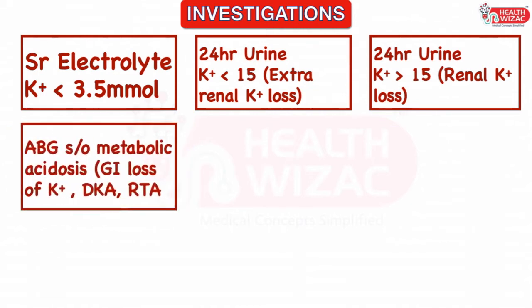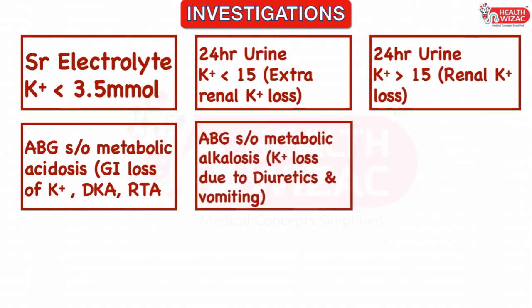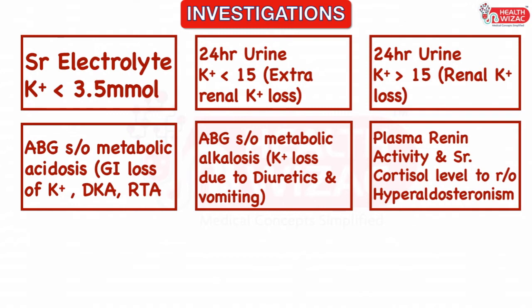Arterial blood gas (ABG) showing metabolic acidosis is suggestive of hypokalemia associated with GI loss especially diarrhea, renal tubular acidosis, or diabetic ketoacidosis. Whereas ABG showing metabolic alkalosis is suggestive of hypokalemia associated with diuretics and vomiting. Plasma renin activity and serum cortisol level may be helpful in diagnosing hyperaldosteronism, which is one of the primary causes for hypokalemia.